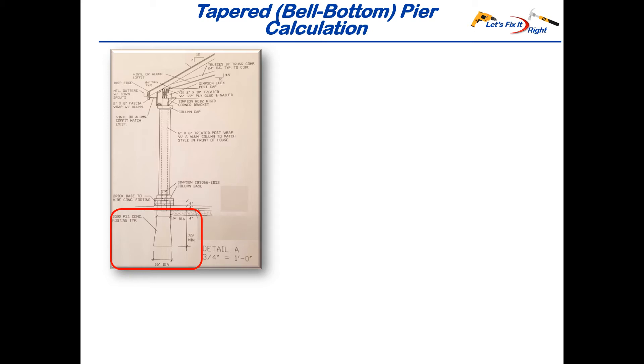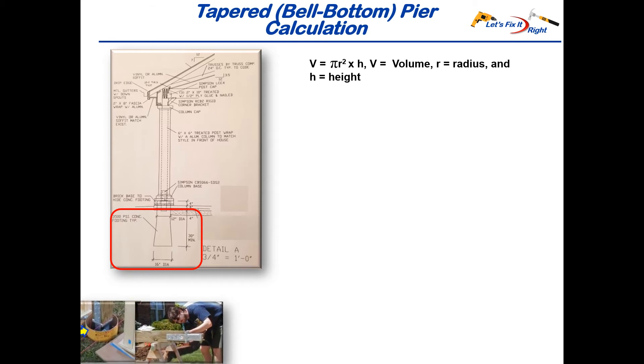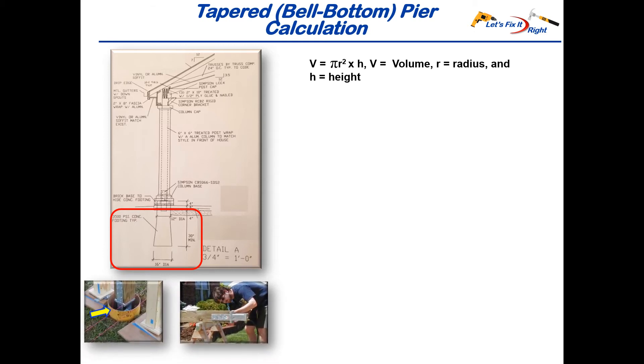Similar to the last example, we're using the standard volume formula for a cylinder, which is pi r squared times the height. However, in this case, the column above is attached to the pier with Simpson ties shown in the lower two photos, so we will not be subtracting a displaced volume from the volume of the bell-bottom pier. The volume of our 12-inch diameter pier is 3.14 times 6 inches squared times a height of 32 inches to obtain 3,617 cubic inches. In this case, I exceeded the required 30-inch depth by 2 inches to ensure that I easily passed the county's pier inspection.